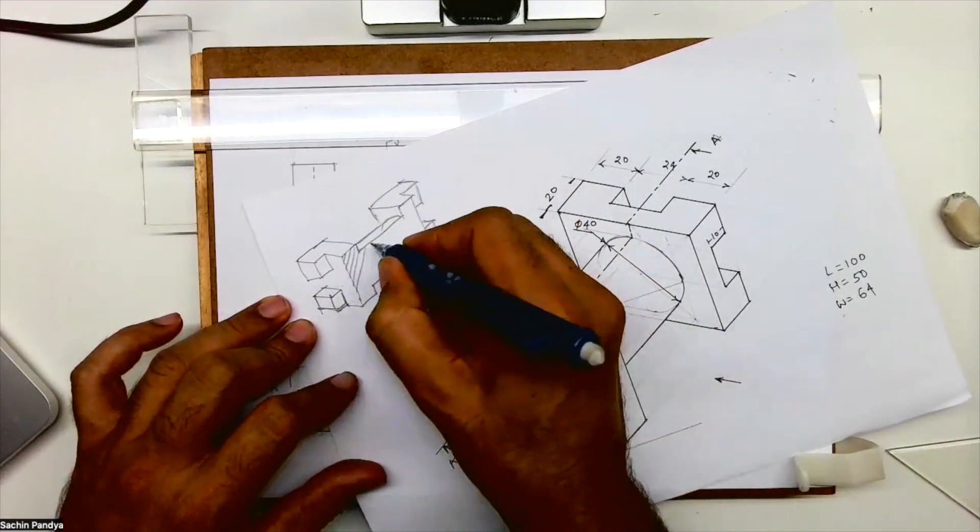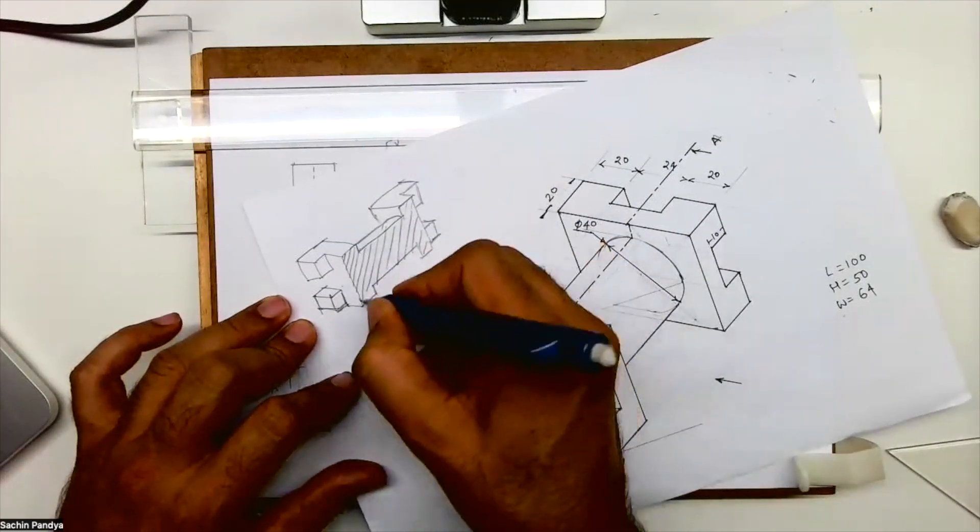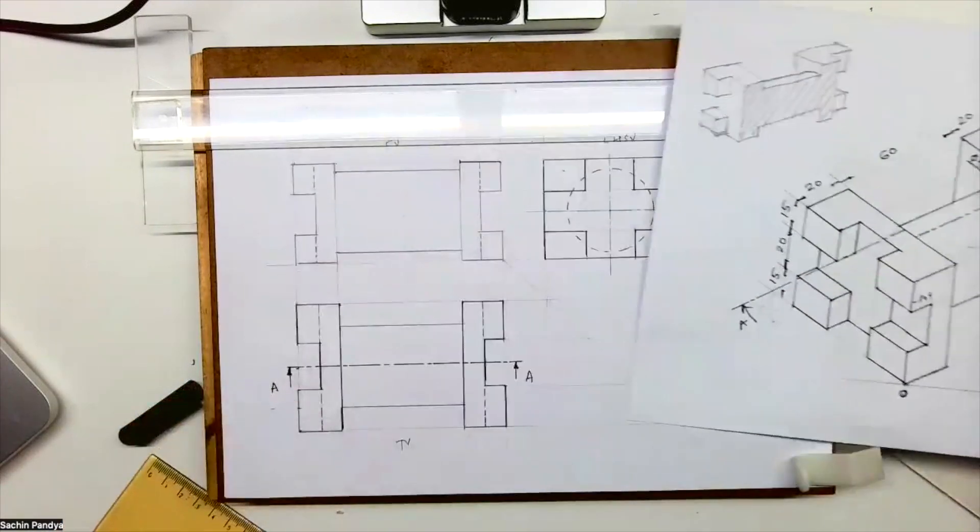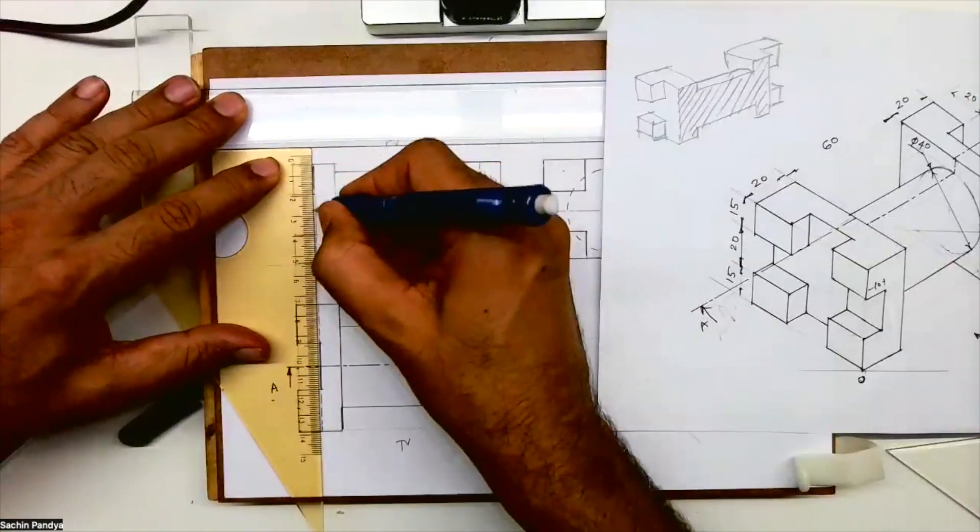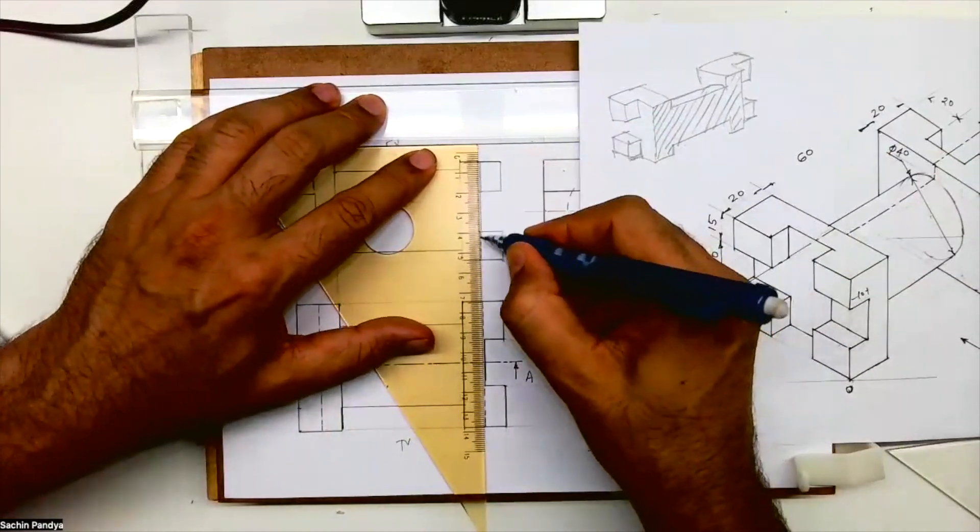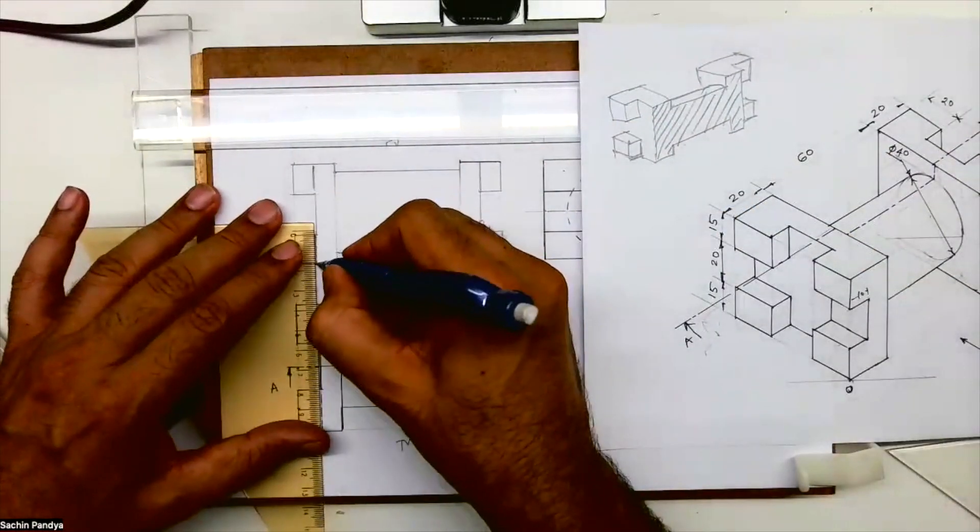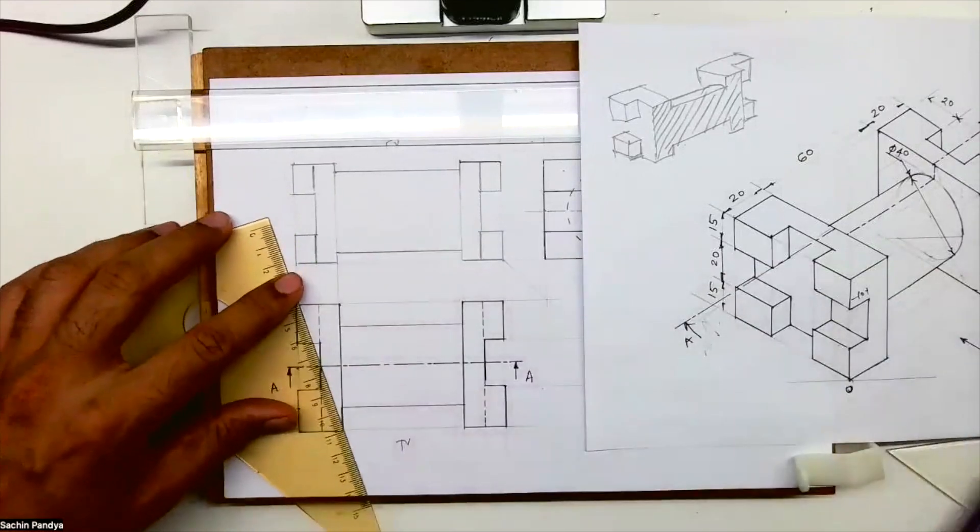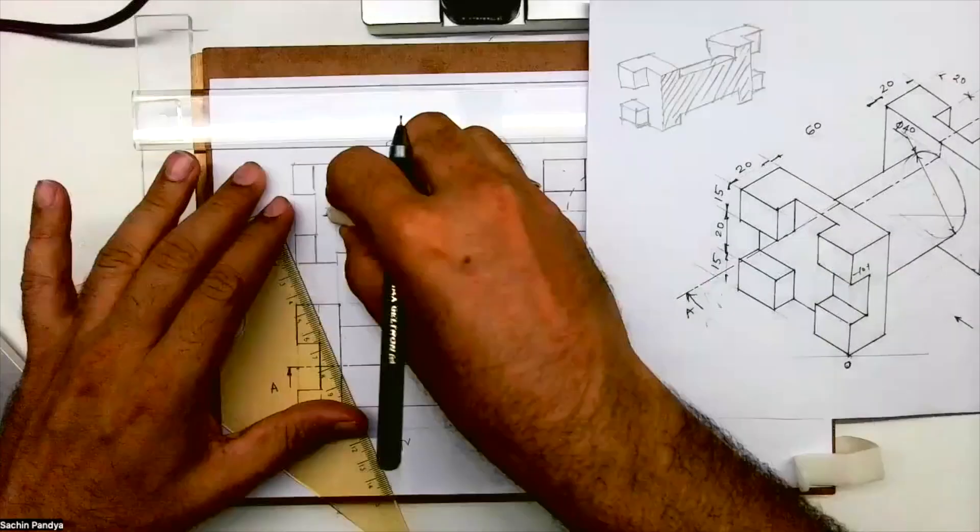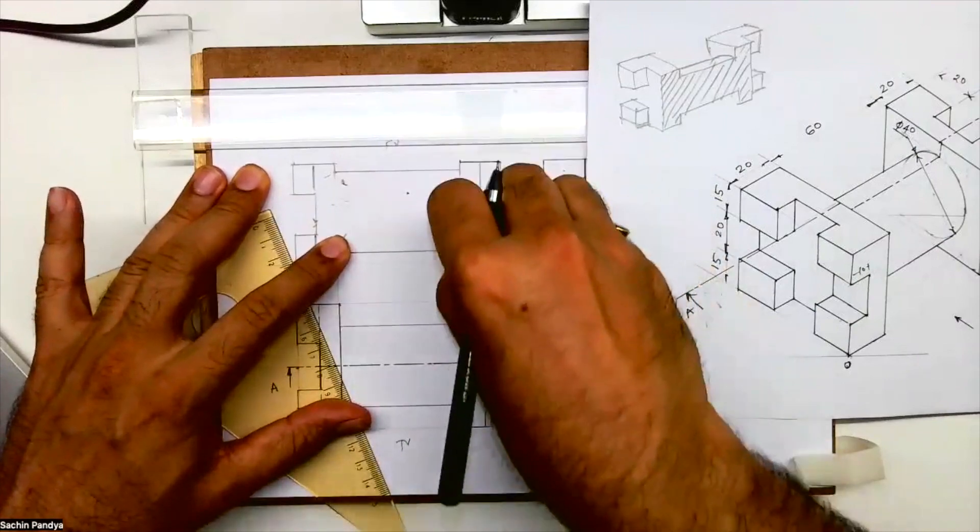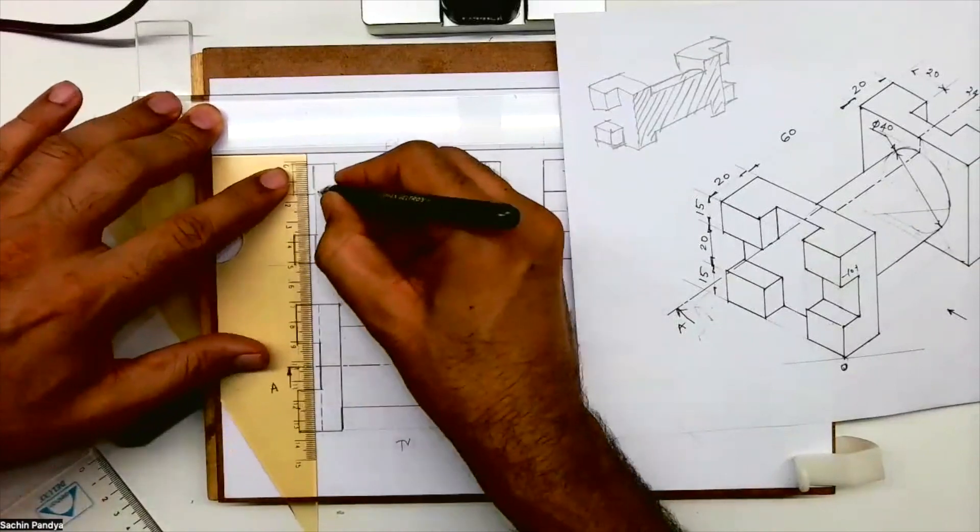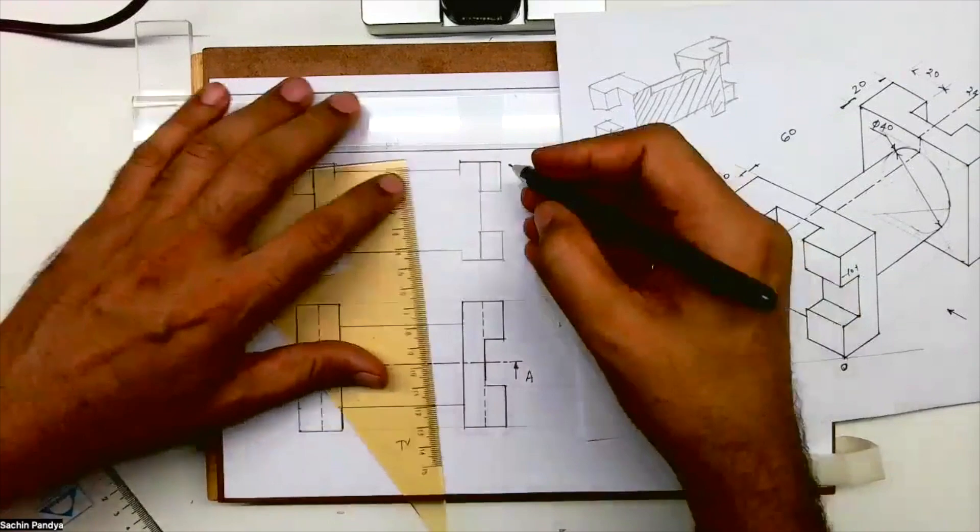This portion will get hatched. This won't get hatched because it is behind. And this also won't get hatched. So when you're doing this, this line will come dotted. See this? Both sides, this line will come dotted. And section will come here. That's why I was not doing this line dotted earlier. If you have seen in my video, I was going dotted. So you have to be careful with the line work.